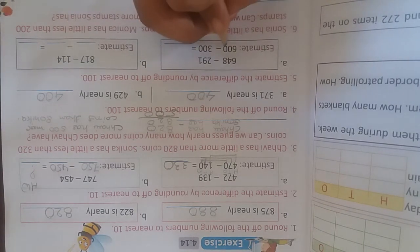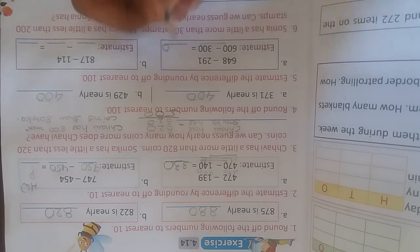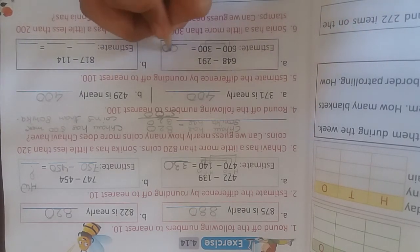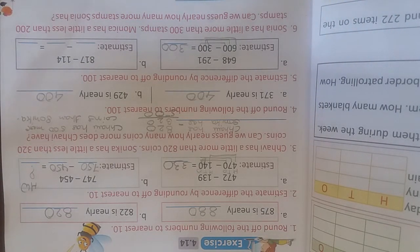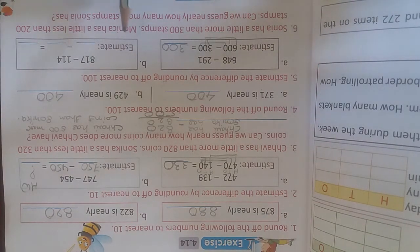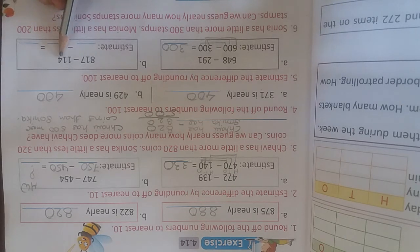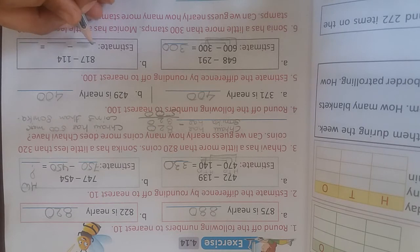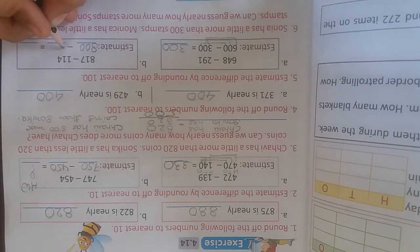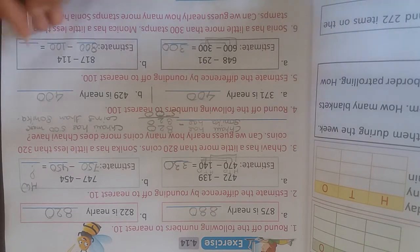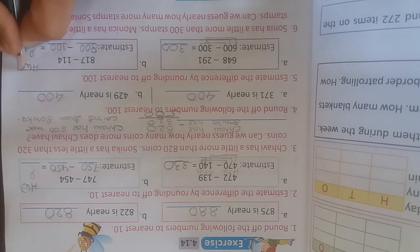Let's do vertical subtraction: 0 minus 0 is 0, 0 minus 0 is 0, 6 minus 3 is 3. The answer is 300. Next, 817 minus 114 — rounding to nearest hundred gives 800 minus 100. This is also your homework.